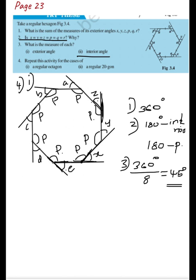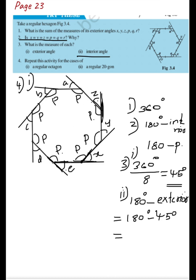To find the measure of each interior angle: subtract the exterior angle from 180 degrees. That is 180 − 45 = 135 degrees. So the measure of each interior angle of a regular octagon is 135 degrees.